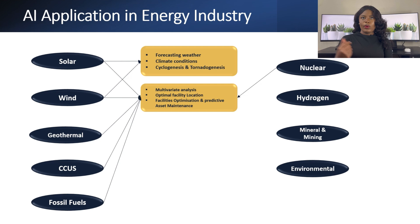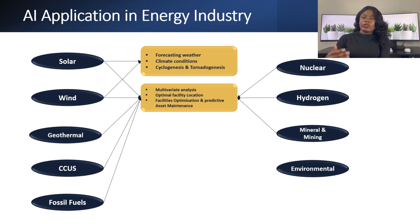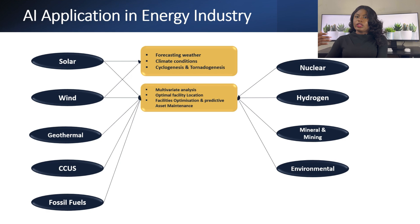With machine learning, we can carry out predictive maintenance of our facilities. Most of this industry involves the location or building of facilities, and these facilities need regular maintenance. Rather than waiting for those facilities to break down or fail, we can predict when equipment is going to fail and act appropriately so that it doesn't affect our production.